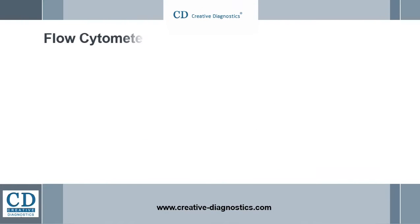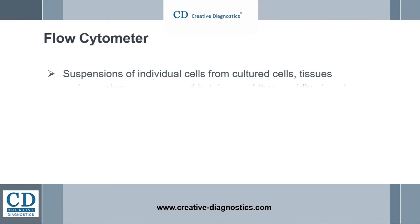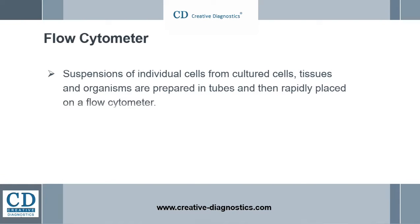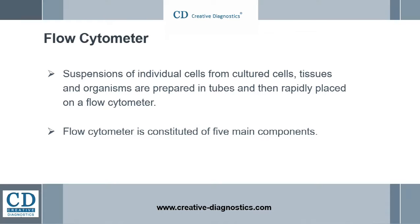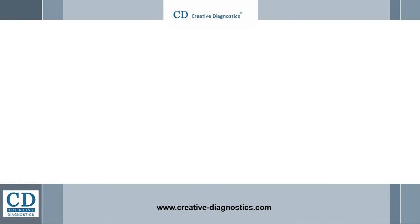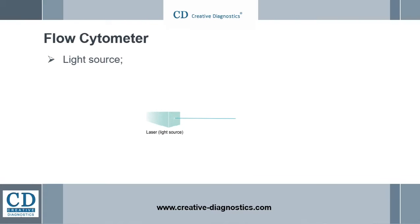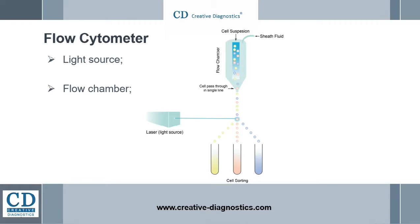Suspensions of individual cells from cultured cells, tissues, and organisms are prepared in tubes and then rapidly placed on a flow cytometer. The flow cytometer is constituted of five main components. The most commonly used light source is a laser, because it can produce a high-intensity beam of monochromatic light. The flow chamber moves the sample into a narrow channel, causing the cells to form a single-file line before passing through the laser.